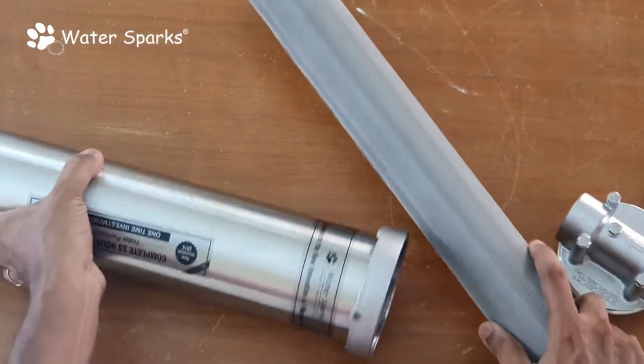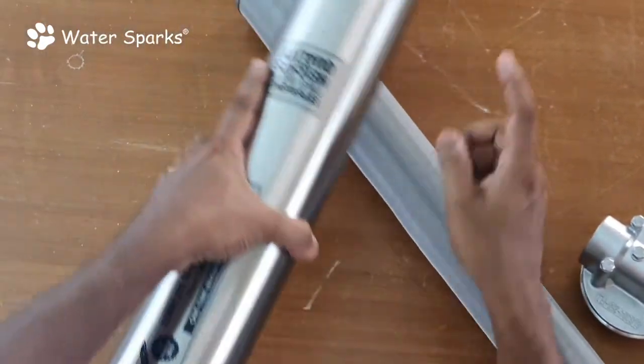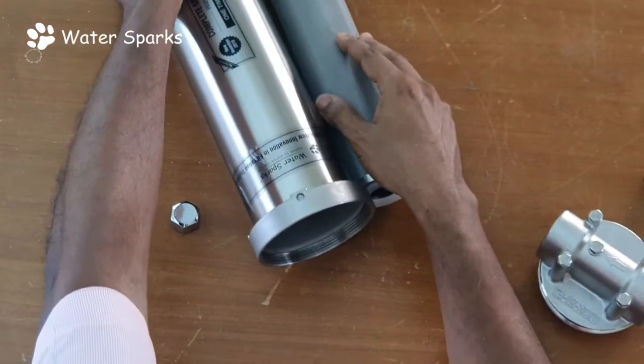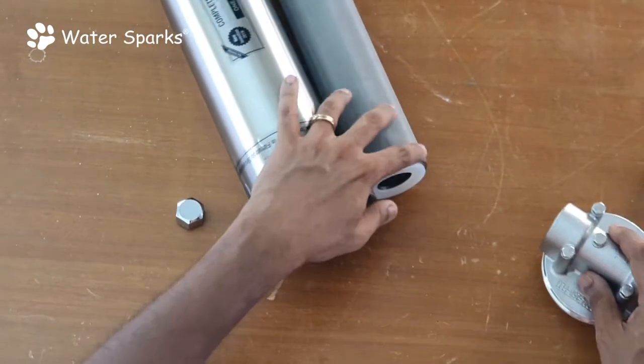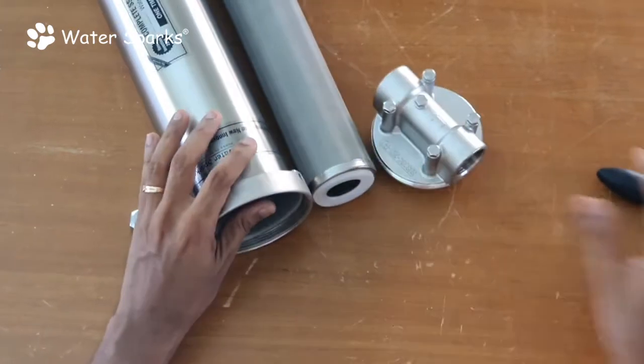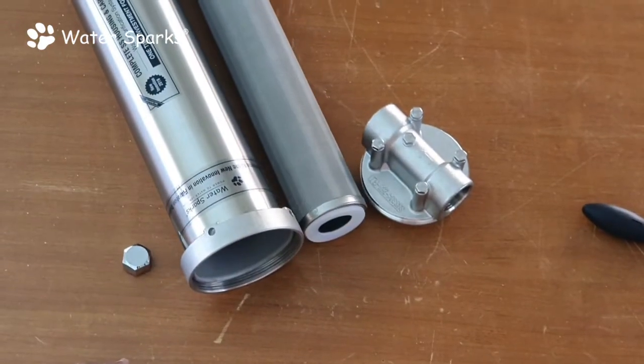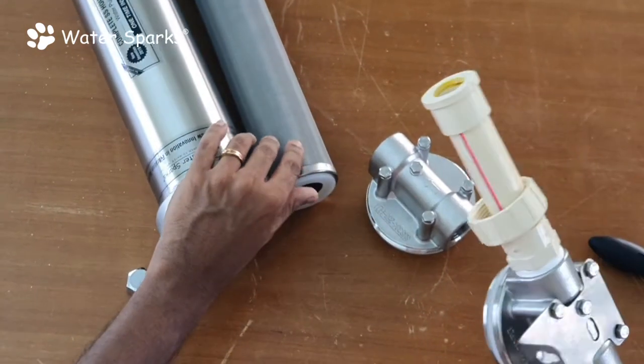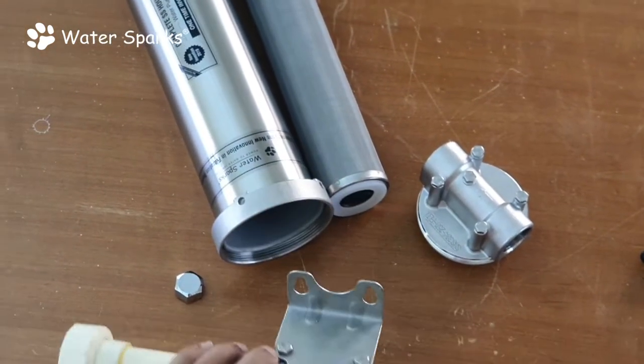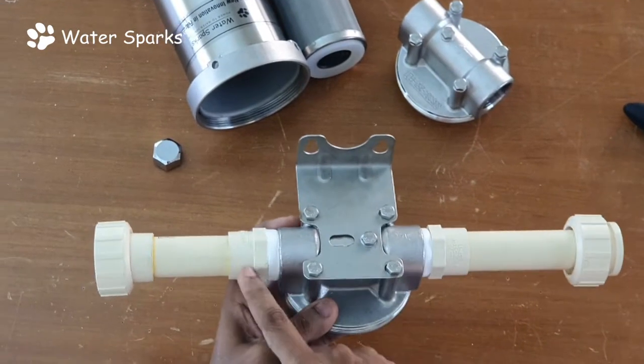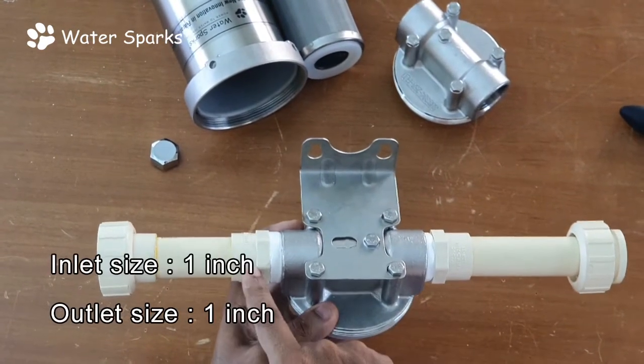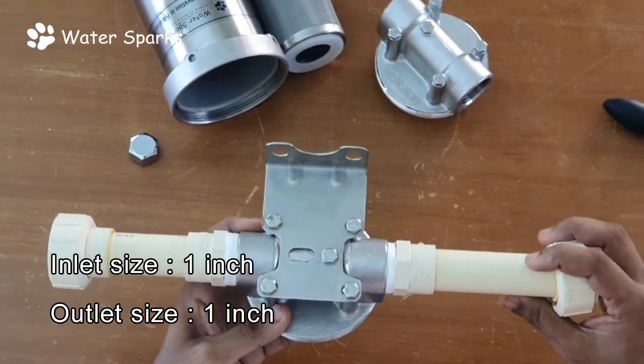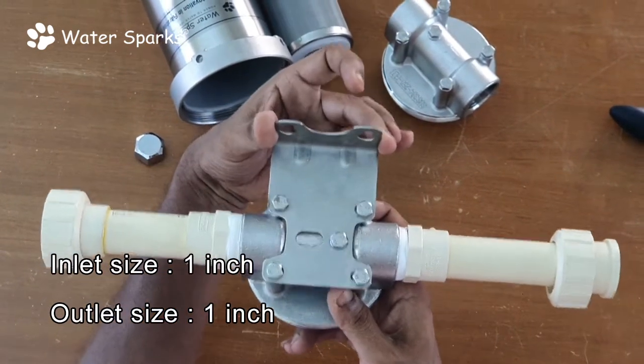I'm going to show you a ready-made setup which you just need to fix on your pipeline from your sump to your overhead tank or from your bore well motor to your overhead tank. The items you need from your nearest hardware store are one inch MTA and unions to connect it in your pipeline. You can mount this on the wall like this.